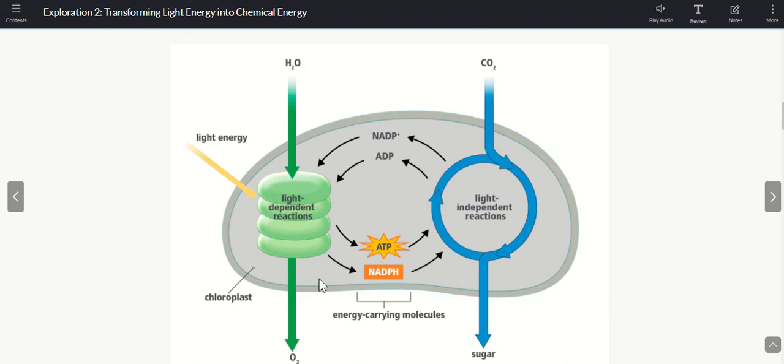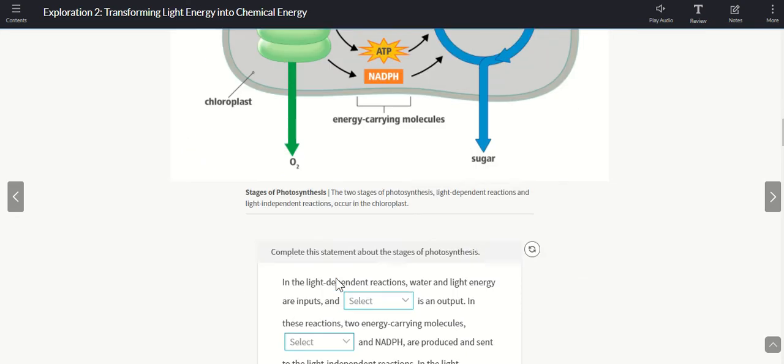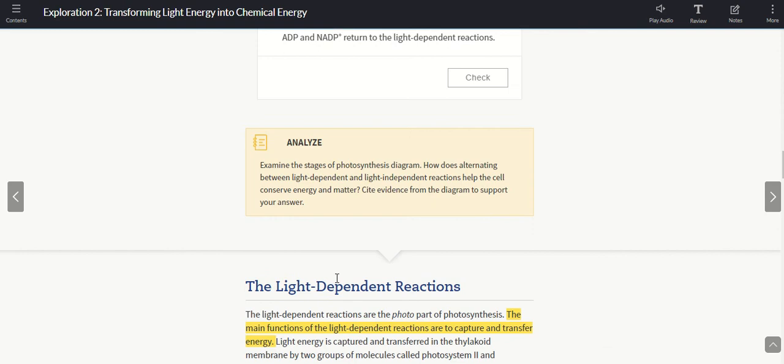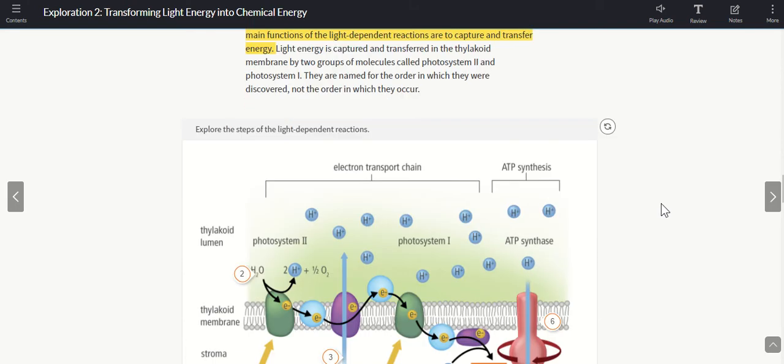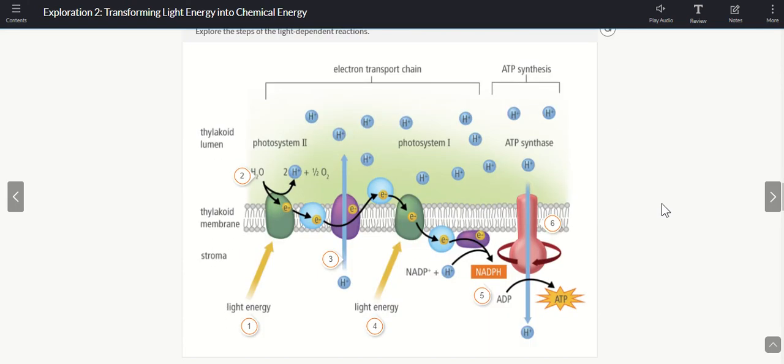All right, so let's talk a little bit more specifically about each of these two reactions. First of all, the light-dependent reaction. Like I said, this is the photo part of photosynthesis. Photo means light. And the main purpose of the photo portion, or the light-dependent portion, is to capture and transfer energy. We want to capture light energy and transfer it to a form that this chloroplast can use, which is your ATP and your NADPH.